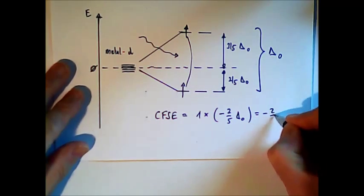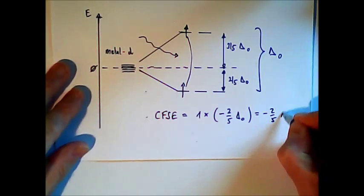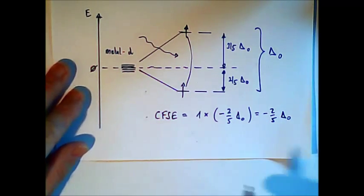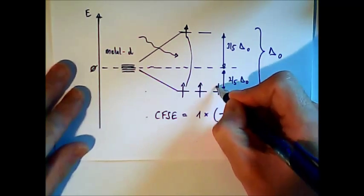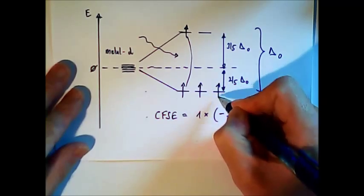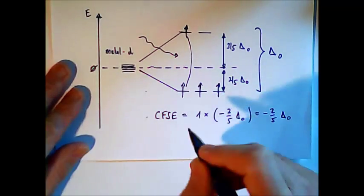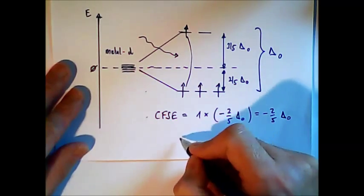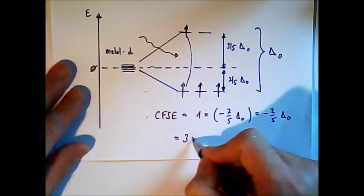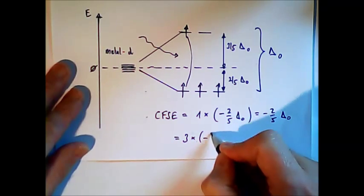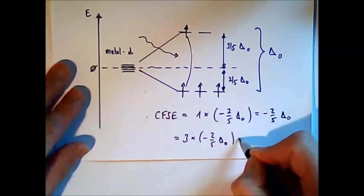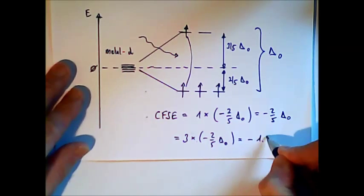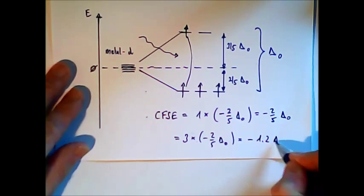the so-called crystal field stabilization energy would be minus 2 over 5 delta-O. Now if we have more electrons, like in the d-3 case, these electrons will be in the lower levels, and then the energy will be 3 times minus 2 over 5 delta-O, or minus 1.2 delta-O.